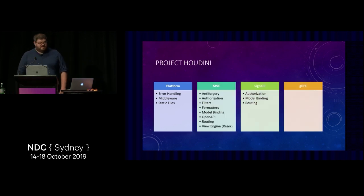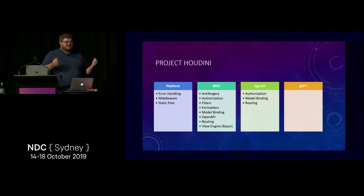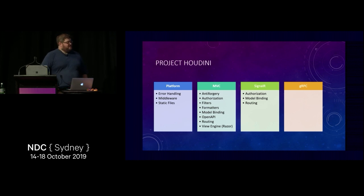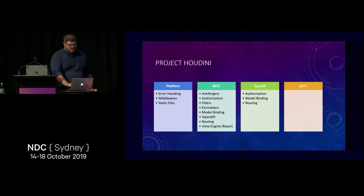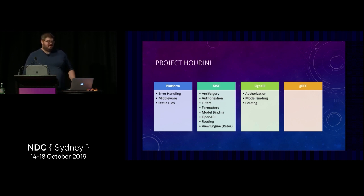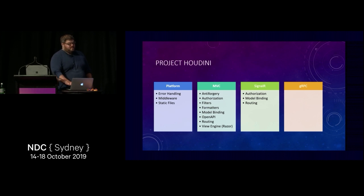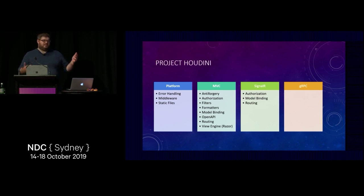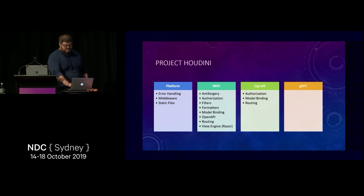Let's add SignalR and gRPC to this. Anything that's part of the platform layer gives you a uniform experience across all these frameworks — shared, reusable, the same no matter what. Anything in MVC, if you want to share it across frameworks, you don't really have the option because it's locked to MVC. If we want to reuse routing inside SignalR, we ended up duplicating it — and that's what SignalR prior to 3.0 was like: it had its own routing system separate from MVC's. So I've been peeling the onion to see how many platform-level features should be abstracted from MVC.